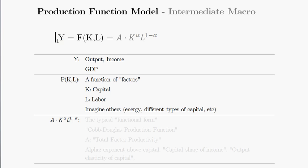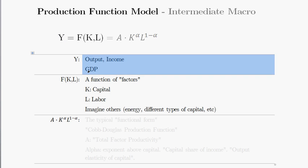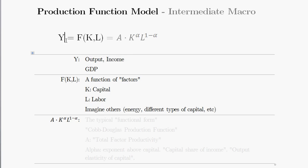So let's start with the basic notation. We say with the production function that y is equal to f of k and l. When we talk about y, think of it as a stand-in for gross domestic product, or GDP. In the macro accounting equation for gross domestic product, output is exactly equal to income. And y is just a stand-in for output or income.